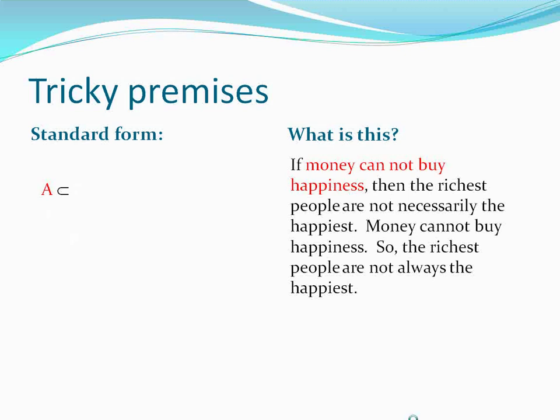Money cannot buy happiness is premise A. B is 'the richest people are not necessarily the happiest' — what follows 'if A, then B.' Then we see a restatement of A: 'money cannot buy happiness.' And we see 'so,' which takes the place of 'therefore' in this argument — there are a number of such indicators in English. The 'so' is represented symbolically as a therefore symbol, and the conclusion 'the richest people are not always the happiest' is represented symbolically as B.